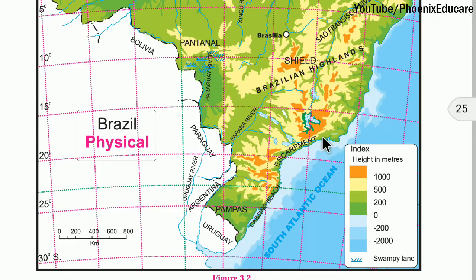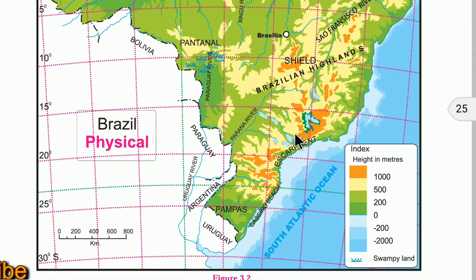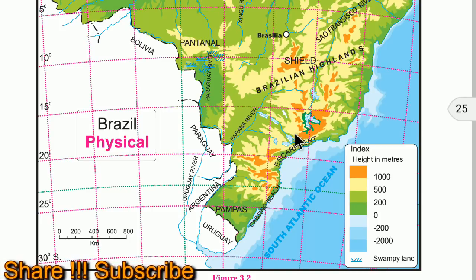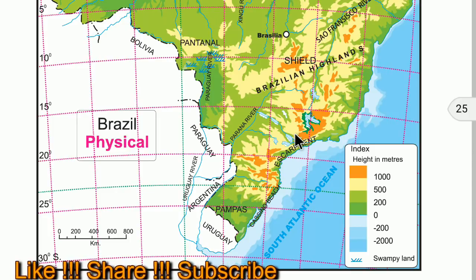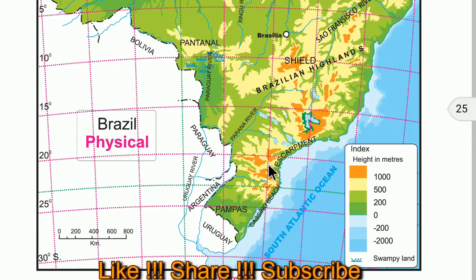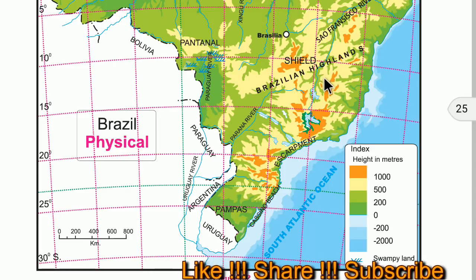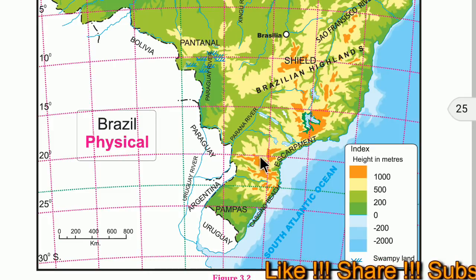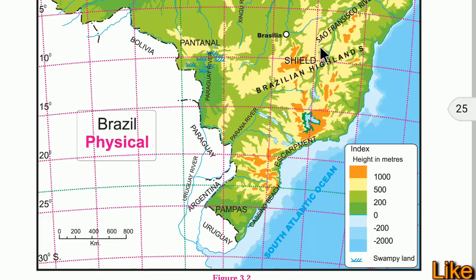The escarpment acts as a barrier to the southeast trade winds, giving rise to a rain shadow area in the northeastern part. As the winds come from the southeast direction, the escarpment acts as a barrier — the higher the escarpment, the more the winds must rise, losing moisture on the windward side. So this windward region gets more rainfall, while the northeastern part of the highland becomes a rain shadow area, also called the drought quadrilateral.